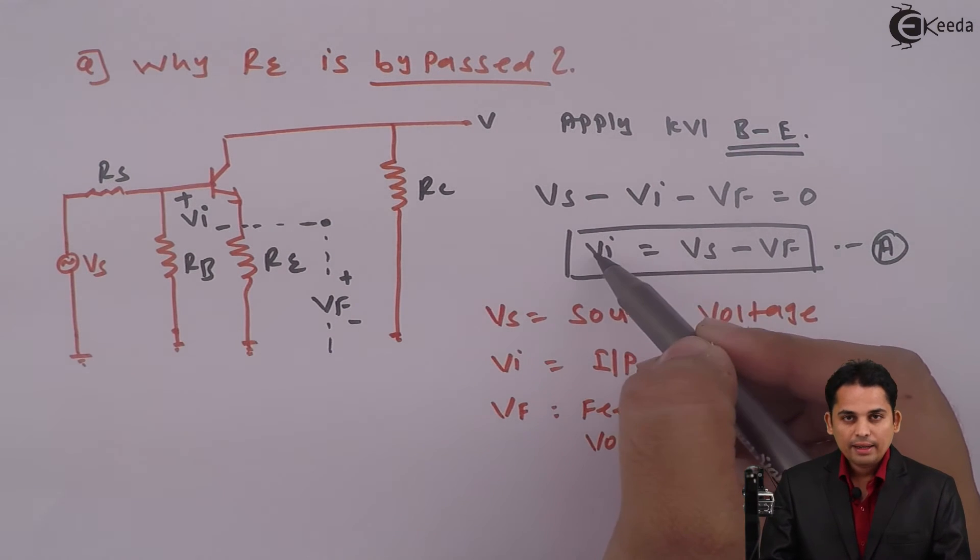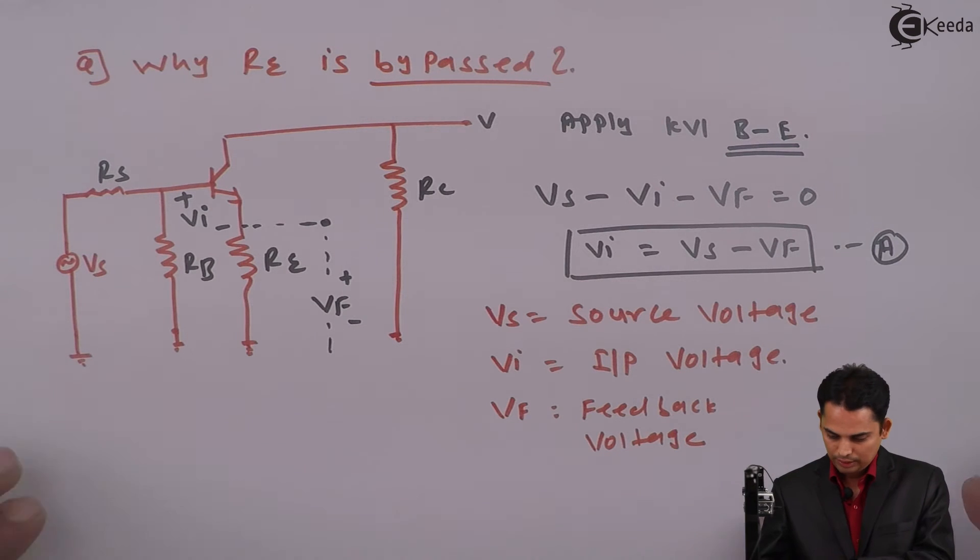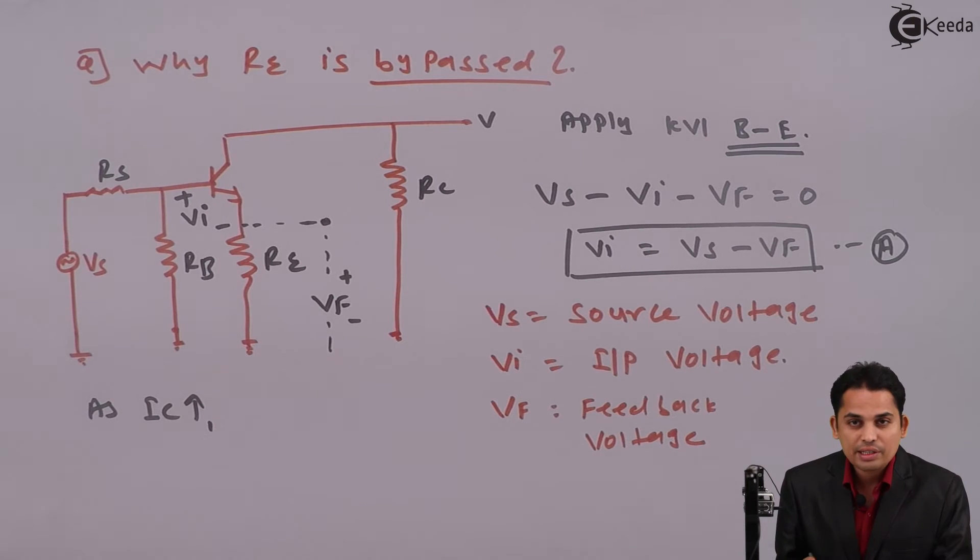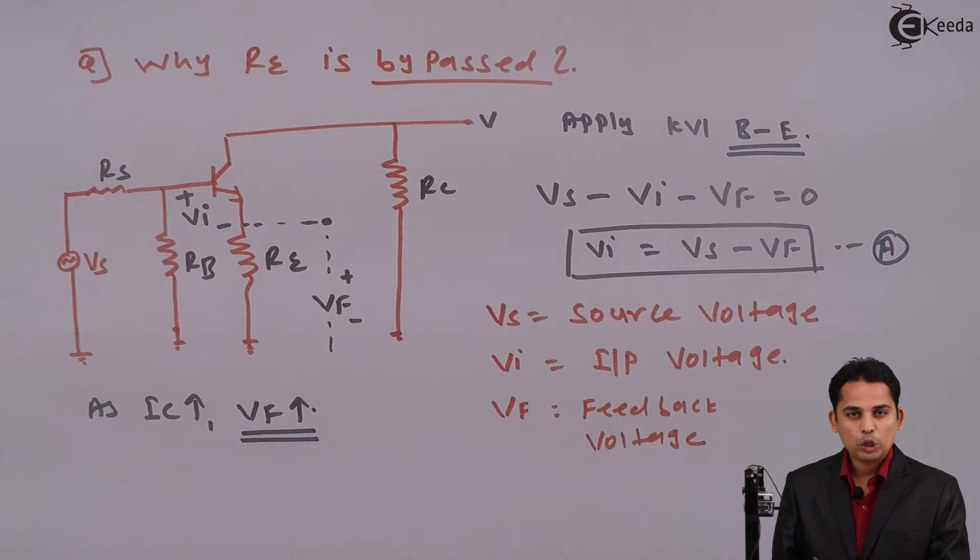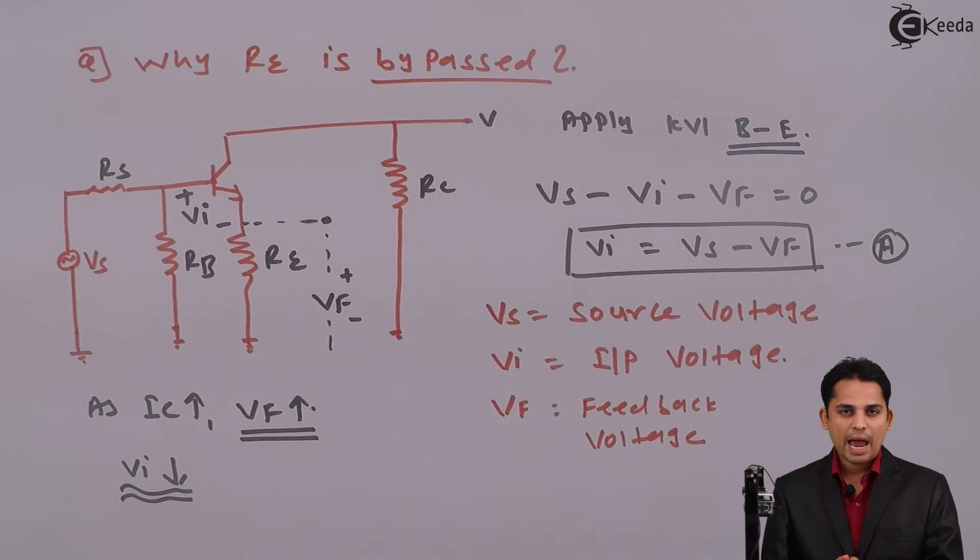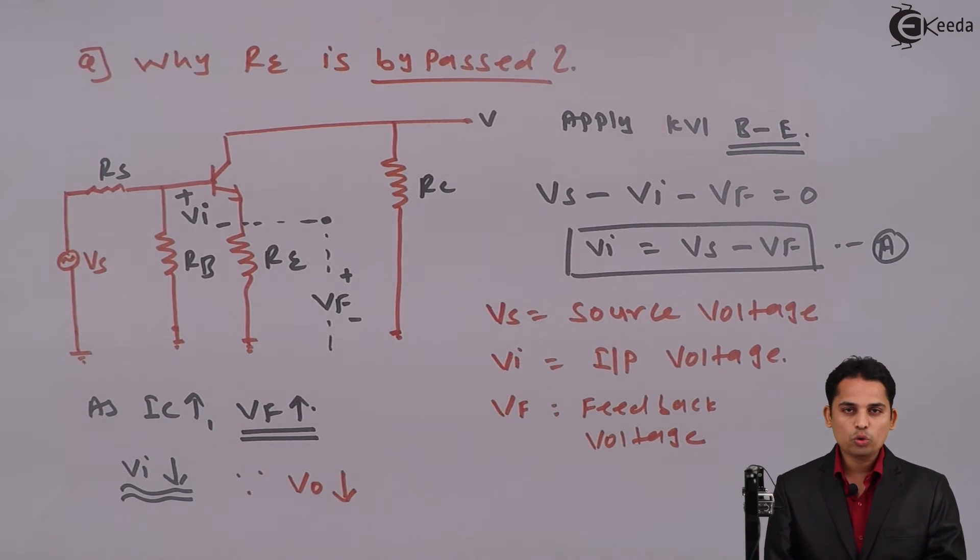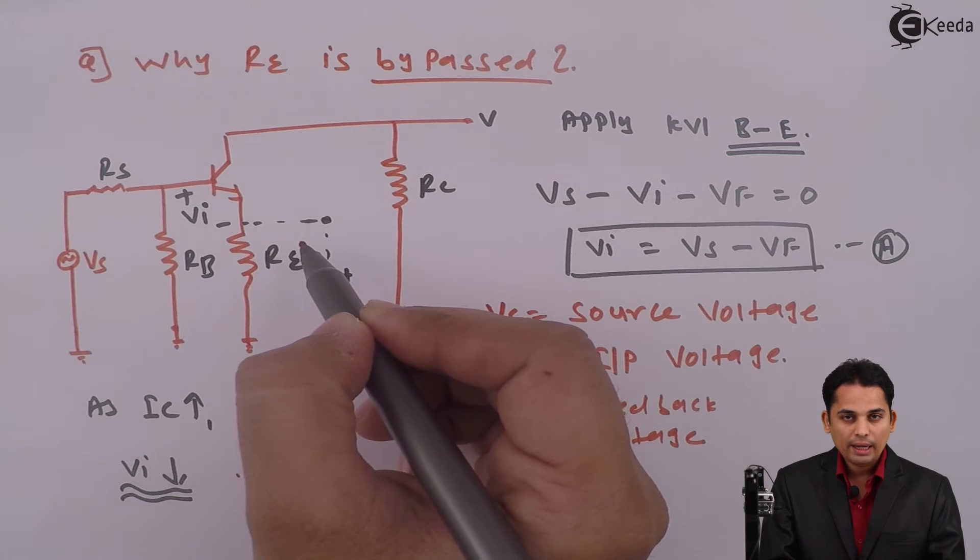In this equation, VI is actual input to the transistor which is given by VS minus VF. But as IC increases, VF will increase, and because of which actual input applied to the transistor, that is VI, will decrease. This is very important point. If actual input to the transistor decreases, then output voltage of transistor will decrease. Hence, output voltage will decrease. The main use of transistor is to amplify the signal, but we are getting less amplification due to presence of RE while AC analysis.